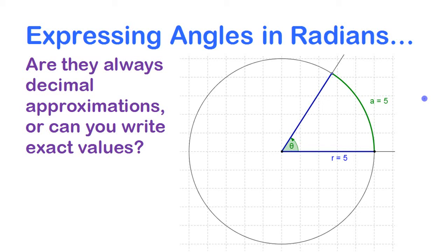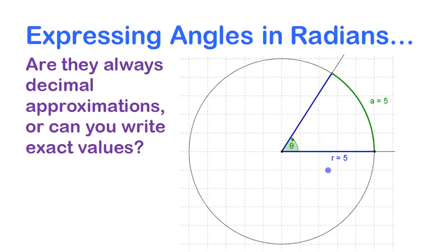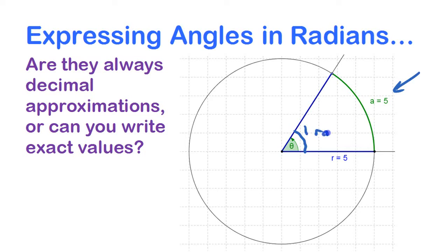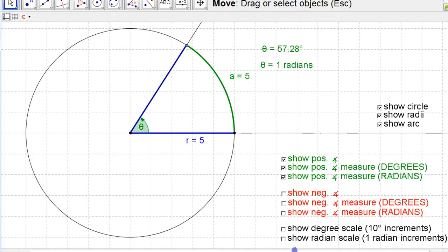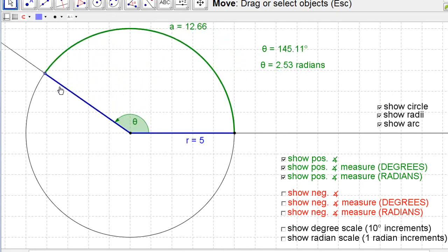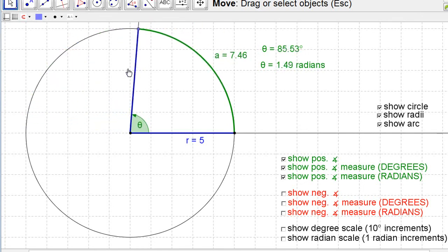We're going to look at how you can express different angles around one rotation in radians. We've already looked at how one radian is the angle at the center when the arc length is equal to the radius. And if you move around that circle, the angle increases as that arc length increases.